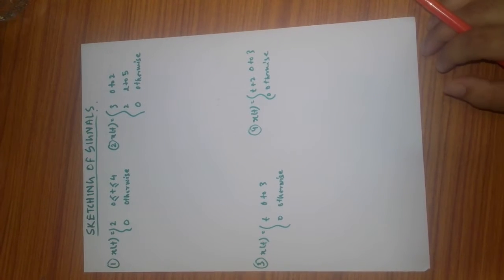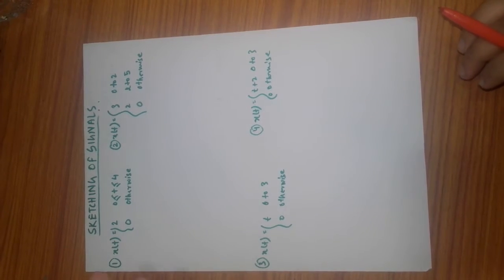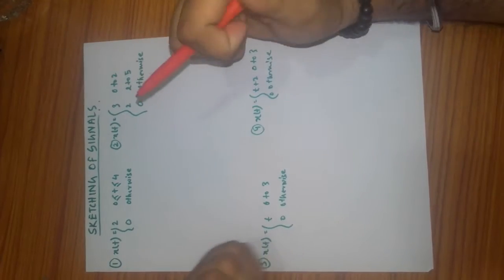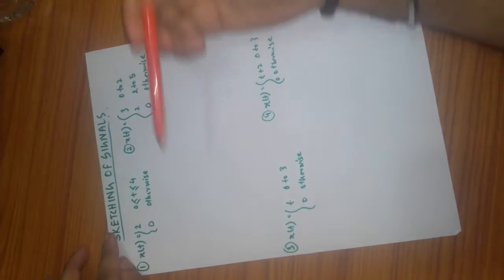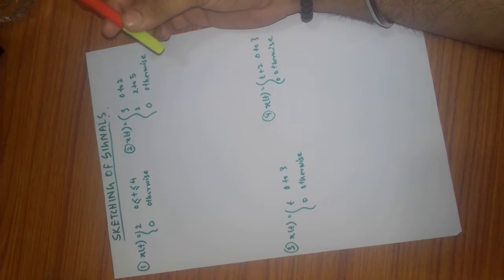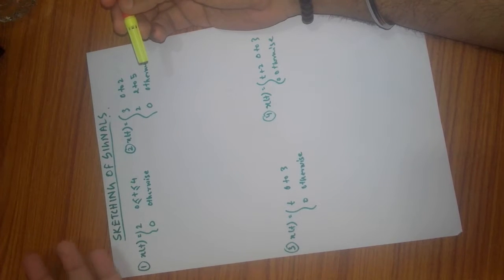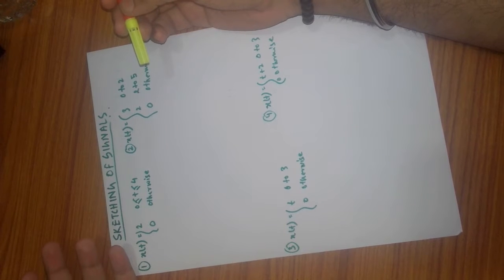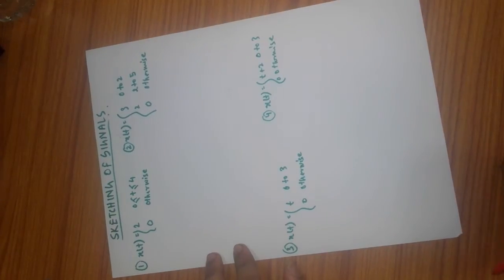Hey guys, I'm Sandeep Roy and today I'm going to teach you sketching of signals — how signals are sketched. Let's jump right into it. Our first question involves x of t. Just by its name we can say it is a continuous signal. If it were x of n, it would be a discrete signal, but here it is a continuous signal.